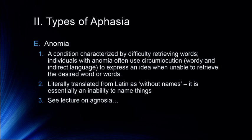Anomia is a condition characterized by difficulty retrieving words. Individuals with anomia often use circumlocution — indirect language — to express an idea when they're unable to retrieve the desired word. This is a lexical access problem, demonstrating a connection between the recognition part of the brain and the language part of the brain. People with anomia have an inability to connect an idea — either internally generated or from an external stimulus — with its name or word. Literally, anomia is translated from Latin as 'without names.' Some of us experience mild word-finding difficulty occasionally, especially as we get older, but this is a complete loss of that ability.